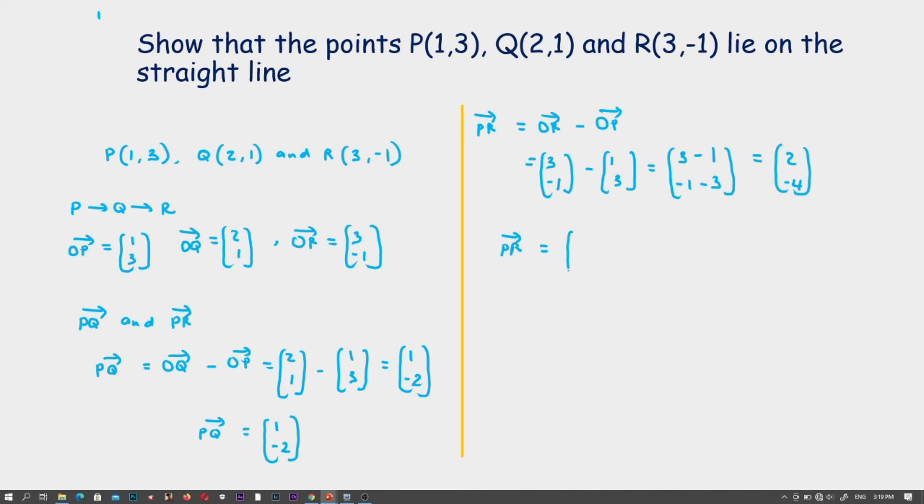Let's compare. We calculated PQ and got (1,-2). If we factorize 2 out from PR, we pull 2 out, and we shall have (1,-2).